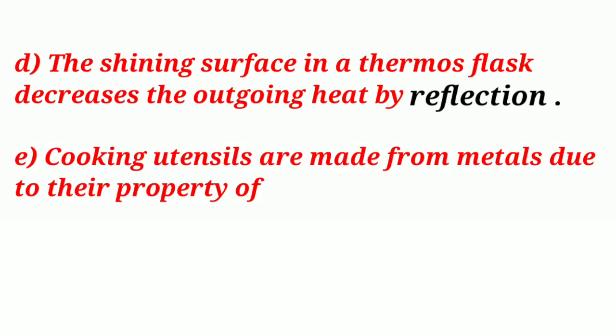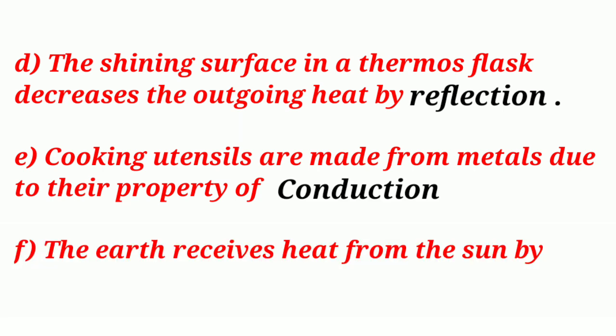Question E: Cooking utensils are made from metals due to their property of conduction. Question F: The earth receives heat from the sun by radiation.